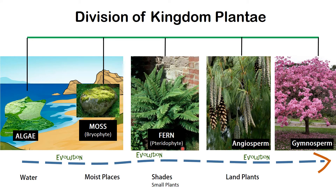Pteridophytes, e.g. fern, which are found in shaded places. Angiosperms and Gymnosperms. And the plants evolved from algae onto Angiosperms and Gymnosperms.